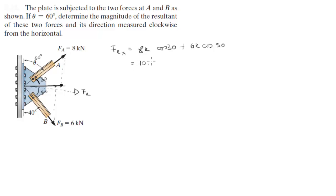Now we do the same thing for the y component of the resultant force, which basically you're adding this force which is the y component of A, and then you're subtracting this force because it's going on the negative y direction. So this will be 8k sin of 30 degrees minus 6k sin of 50 degrees. This will give you negative 0.596 kilonewtons. Always use units.